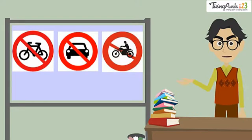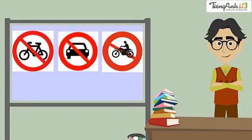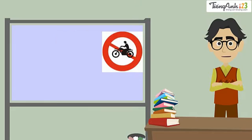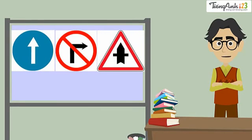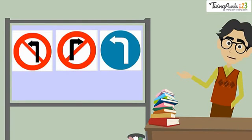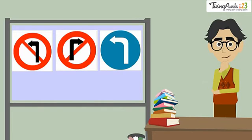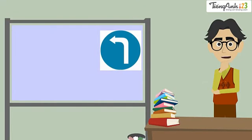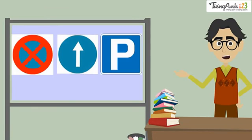The next one is for My — which sign means that you cannot drive a car on this road? And for Chung — which sign warns you that there is an intersection ahead and you must slow down? Which sign tells you that you can't turn left? And the last question: which sign warns you that you mustn't park here?